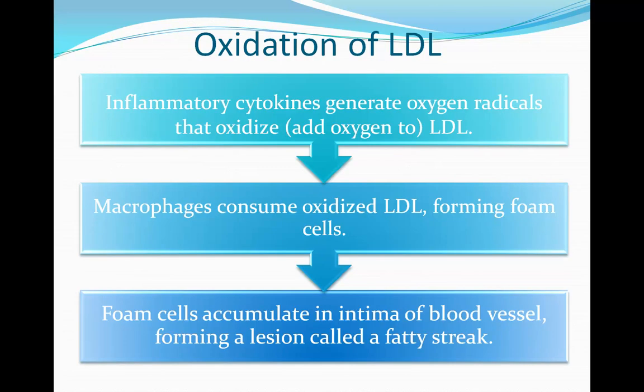Atherosclerosis progresses as LDL becomes oxidized. LDL enters the tunica intima of blood vessel walls. Inflammatory cytokines then generate oxygen radicals that oxidize the LDL. Macrophages at the site of injury consume these oxidized LDL, forming foam cells. Foam cells accumulate in the intima of blood vessels, forming a lesion called a fatty streak.